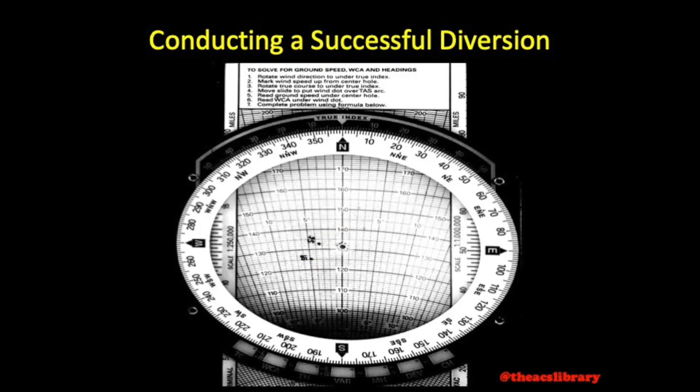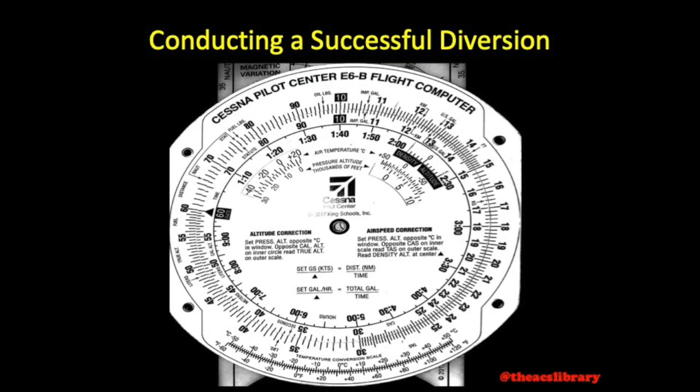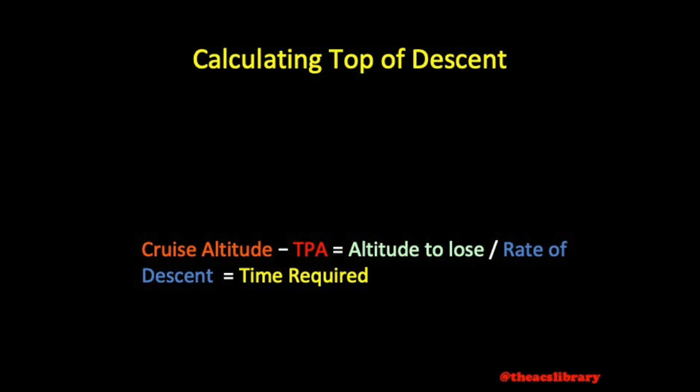Once you've found your ground speed and wind correction angle, follow the instructions on the opposite side of the E6B to find your expected time en route based on distance and ground speed, then find fuel consumption based on time and predetermined cruise fuel consumption. To find top of descent, one may determine the time required to reach traffic pattern altitude based on a desired descent rate using the formula shown.